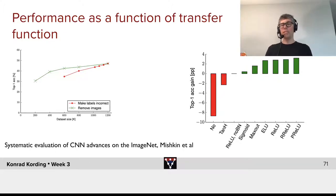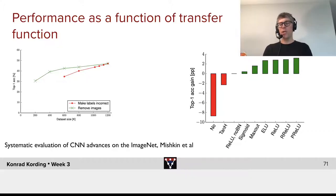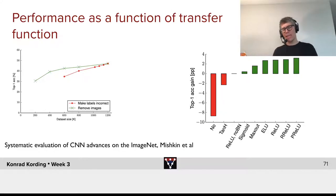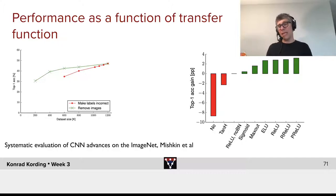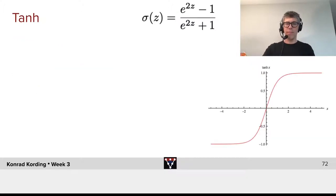If we use tanh, which is no longer very popular, we lose about 2% relative to ReLU. Whereas if we use some of the more modern transfer functions, we gain 2–3%. You can say, well, 2–3% is not all that much, but it actually is a very large effect relative to the amount of data — we could have gotten the same performance with half of the data, and keep in mind that this kind of data is really expensive. So let's talk through them.